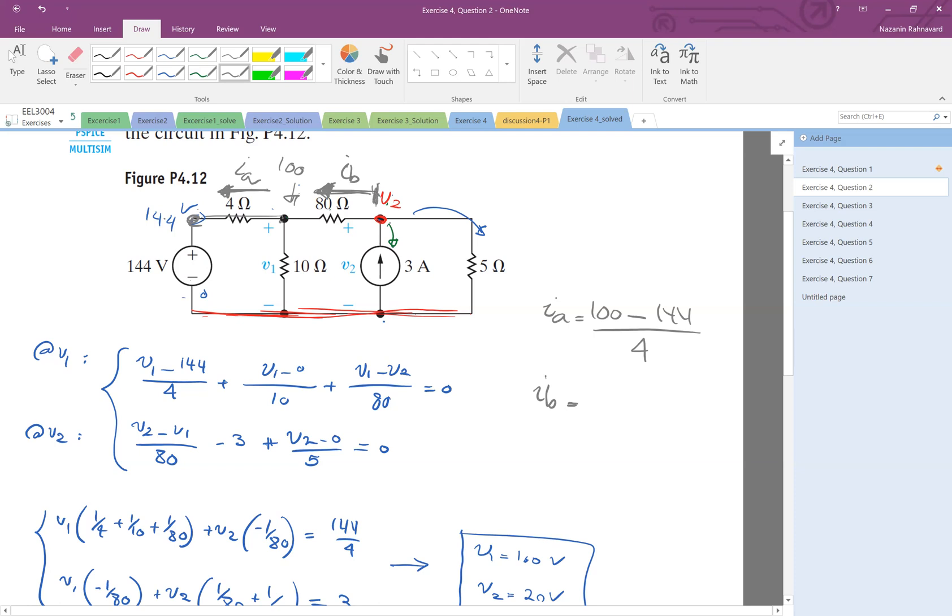At the beginning the node is V2 minus V1, so Ib is basically V2 minus V1 divided by 10. V2 is 20 minus V1, which is 100, divided by 10.